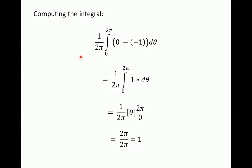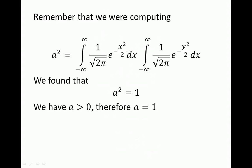Now we just have the integral from 0 to 2π over θ. Since the bracket simplified to 1, we integrate a constant 1 over θ, which gives us θ evaluated from 0 to 2π. That's 2π minus 0 = 2π. Multiplied by the constant 1/(2π) out front, we get 2π/(2π) = 1.